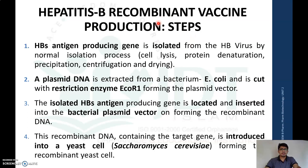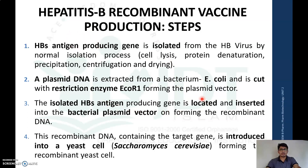The first step in production is the isolation of the HBsAg-producing gene from hepatitis B virus by cell lysis, protein denaturation, precipitation, centrifugation, and drying. A plasmid DNA is then extracted from the bacterium E. coli, and this plasmid is cut with the restriction endonuclease enzyme EcoRI to form a plasmid vector. The isolated HBsAg gene is then inserted into the bacterial plasmid using DNA ligase enzyme to form a recombinant DNA.